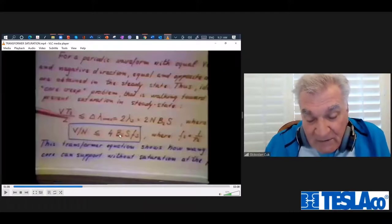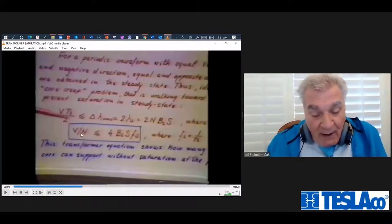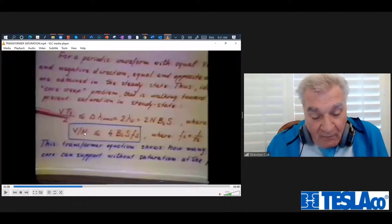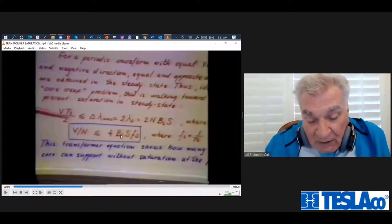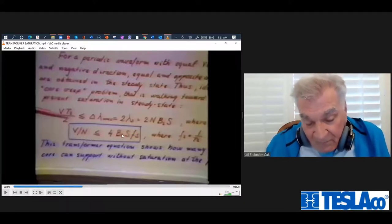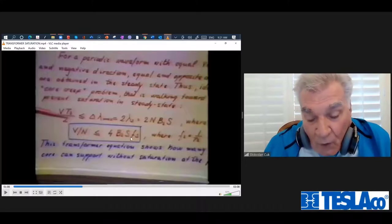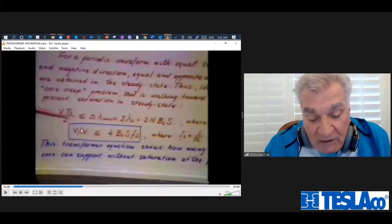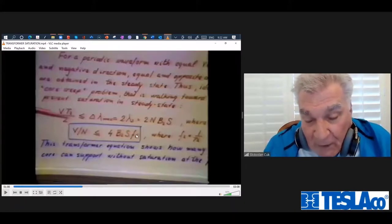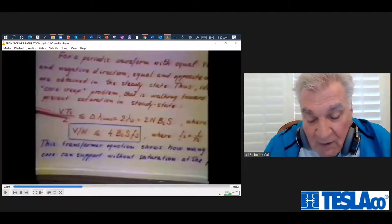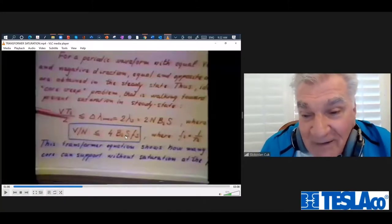If you have a frequency increase 1,000 times from 50 hertz to 50 kilohertz, what can you do with the cross-section? Because saturation flux density times frequency determines volts per turn. Saturation flux density is a constant, say for ferrite 0.5 tesla. But the product of cross-section of the core and frequency determines volts per turn. So if I increase the frequency 1,000 times, I reduce the cross-section 1,000 times! Is that right?